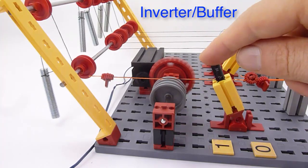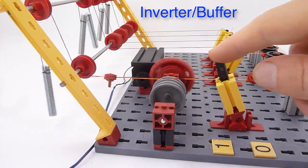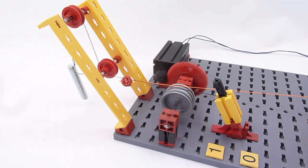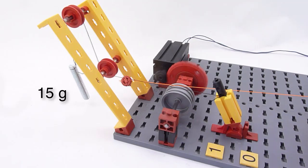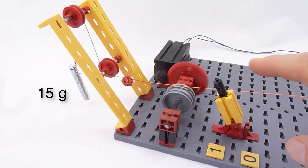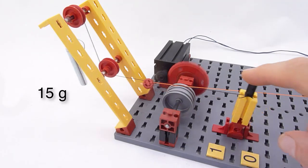Let us look at an inverter buffer first. The lever is pulled to one by a weight of 15 grams. You have to exert a force of more than 15 grams to pull it down to zero.